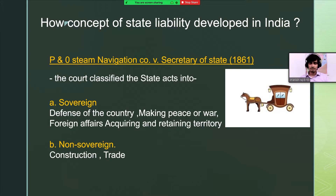The instant case is a very famous case law. In the case of P&O Steam Navigation Co. versus the Secretary of State, there was a horse carriage that met with an accident due to the negligence of a government employee. The court classified the state's acts into two parts: first, sovereign, and second, non-sovereign. Sovereign was defined as work done for the defense of the country, making peace or war, foreign affairs, or acquiring and retaining territory. Non-sovereign functions included construction works, trade, and other commercial works.